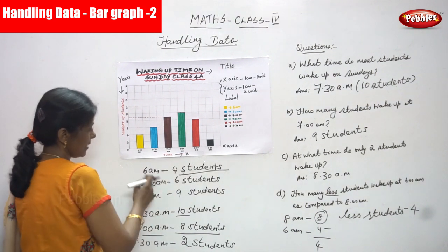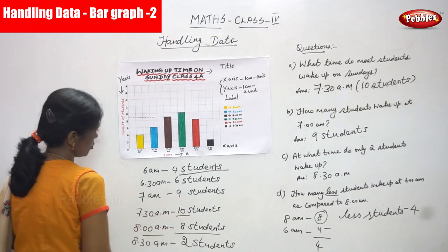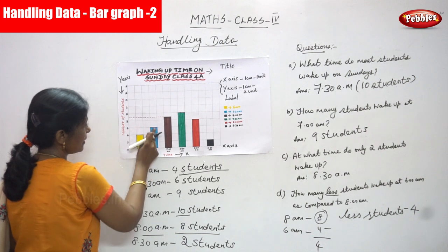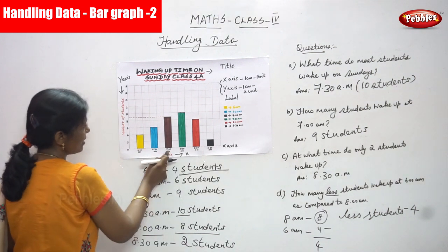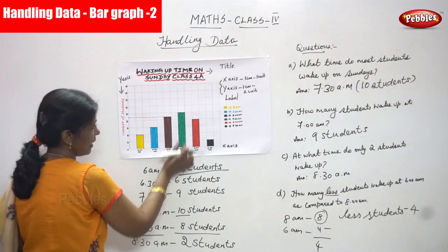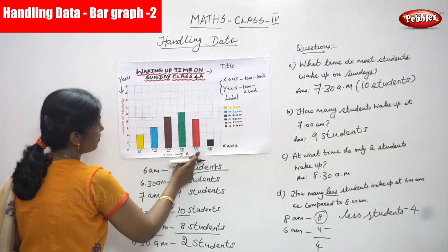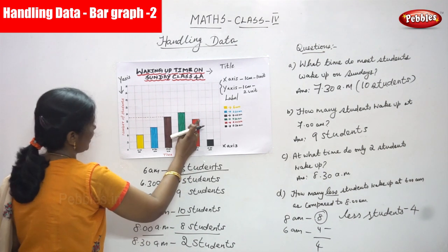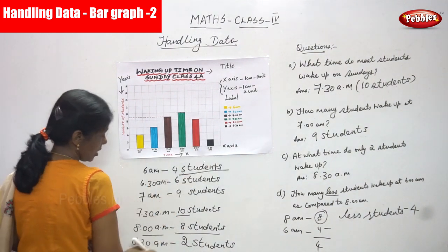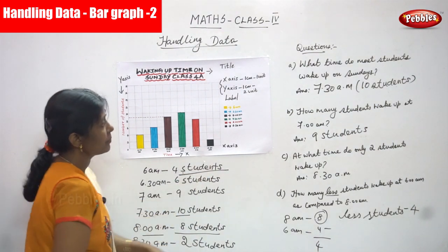So these are the different colors I shaded in the vertical bar graph. 6 a.m. — 4 students. 6:30 a.m. — 6 students. 7 a.m. — 9 students. 7:30 a.m. — 10 students. This is a very tall bar — the number of students is the highest. 8 a.m. — 8 students. And 8:30 a.m. — only 2 students, shaded in black color. So these are the questions I answered very clearly.